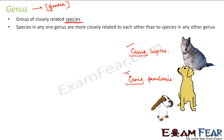Species in any one genus are more closely related to each other than to species in any other genus. For example, dogs and gray wolves fall under the same genus, so they share more similarities with each other than dogs share with a lion, because a lion belongs to a different genus. Dogs will therefore share more similarities with gray wolves than with lions.